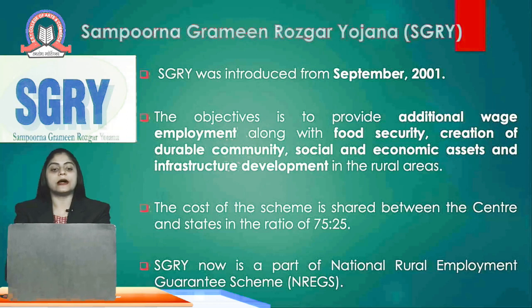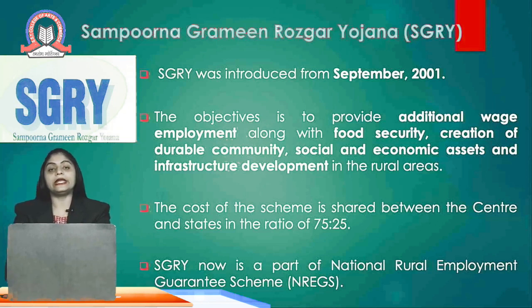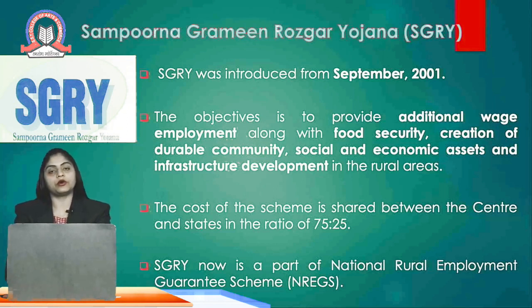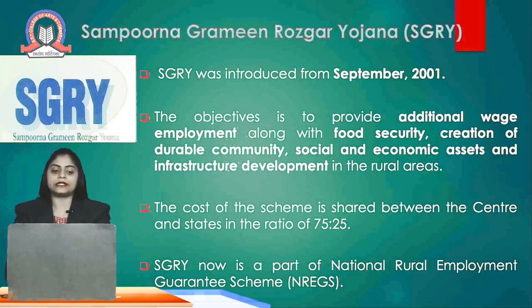The third scheme is Sampoorna Grameen Rozgar Yojana, introduced in September 2001. The main aim is additional wage employment along with food security, creation of durable community assets, and social and economic infrastructure development in rural areas. The cost is shared in the ratio of 75 to 25, with 75% by the central and 25% by the state. It is now a part of the National Rural Employment Guarantee Scheme.